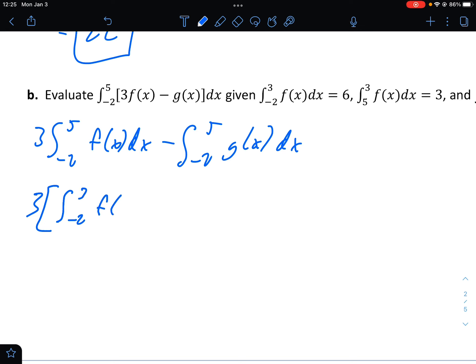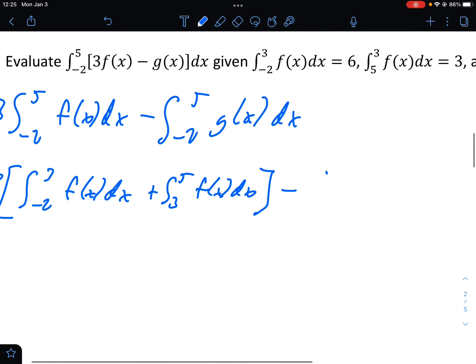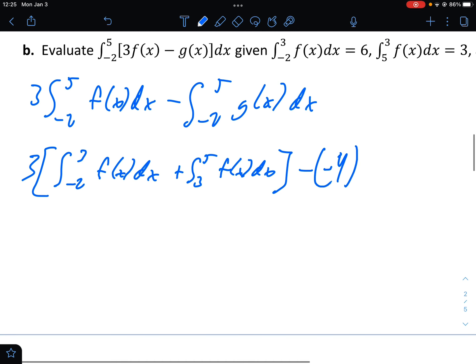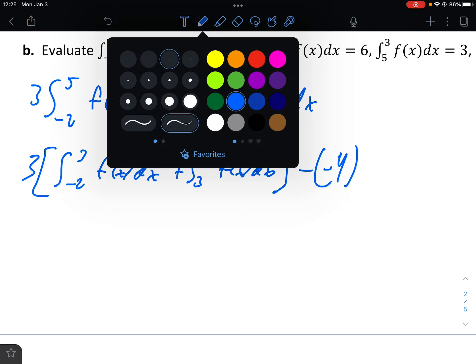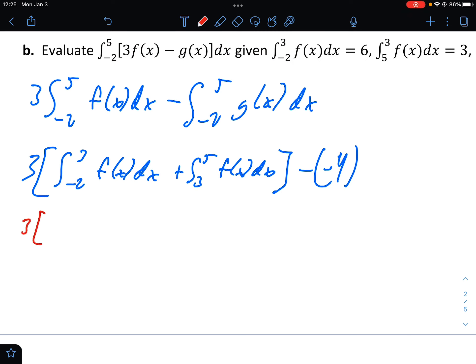Now we don't know this value, but we know this here. So we're going to take a lot of different properties that we learned here. It's going to be 3 times the integral from negative 2 to 3 of f of x dx plus the integral from 3 to 5 of f of x dx minus, this we do know, the integral from negative 2 to 5 of g of x is negative 4. So minus negative 4. All right, so we're still not ready to solve this quite yet.